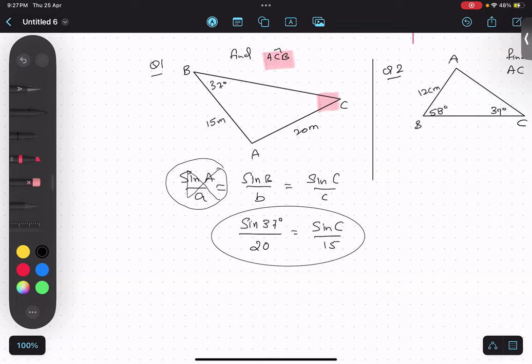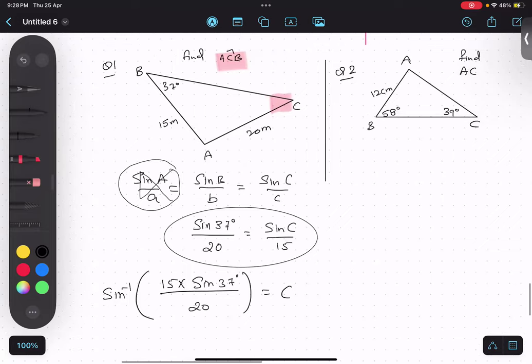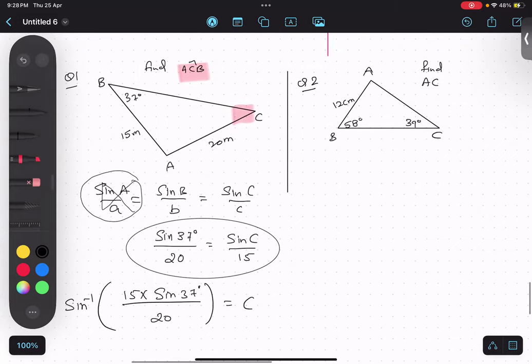You can find out sin 37 degree into 15. Don't write at the end, you should write 15 in the beginning, upon 20, and everything sin inverse. If you solve this you will get the angle over here. I think n-solve is better, use n-solve.